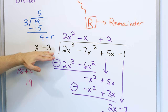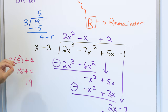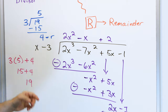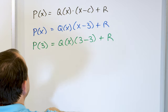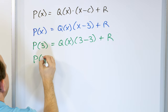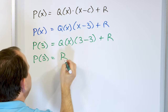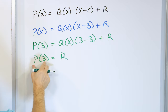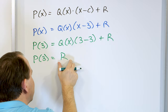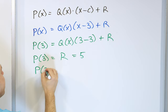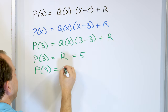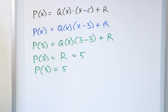So when you plug in a value of 3, this term goes to zero. P evaluated at 3 is equal to zero plus the remainder, which means the polynomial evaluated at 3 equals the remainder, which equals 5. And this is not a proof, but it's showing you that it works and why it works.